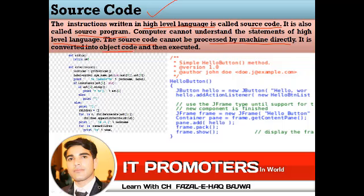Source code is converted into object code, and then it is executed by the computer system.